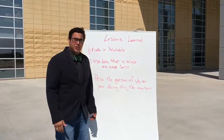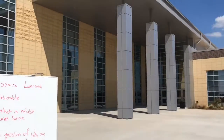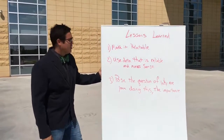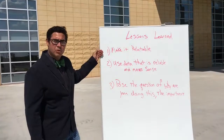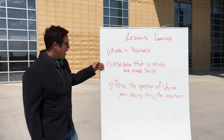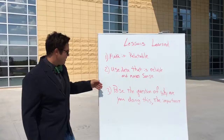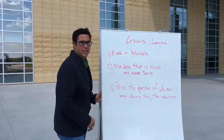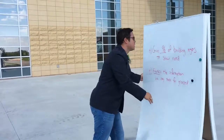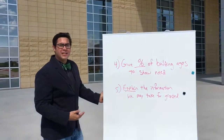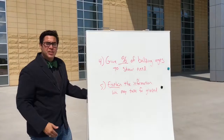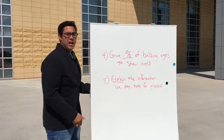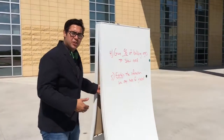Welcome to the Career Education Center — it was built in 2017. The final part: lessons learned from this paper. Make sure it's relatable. Use data that's reliable and makes sense. Pose the question of why are you doing this — what's the importance of your dissertation? For the bond, give a percentage of building ages — that was good information. And finally, explain the information in terms that people can understand.